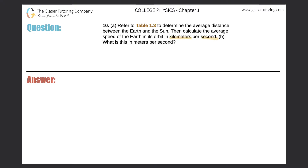If you go to the book and look up table 1.3, you'll find that the distance between the Earth and the Sun is 10 raised to the 11 meters. So let me draw a simple picture — here's the Earth as a dot, and this object is the Sun. The distance between the two, as it says in the book, is 10 raised to the 11 meters.